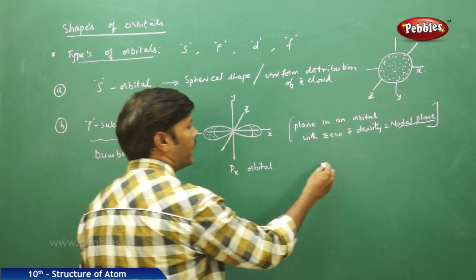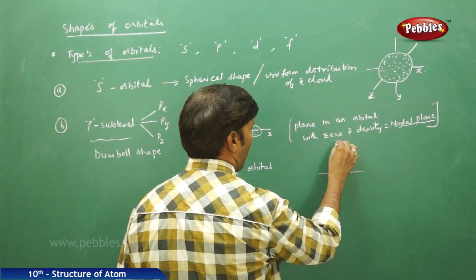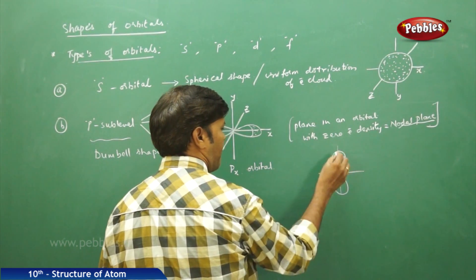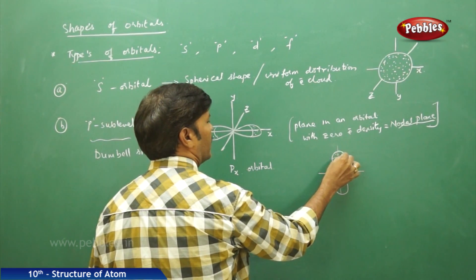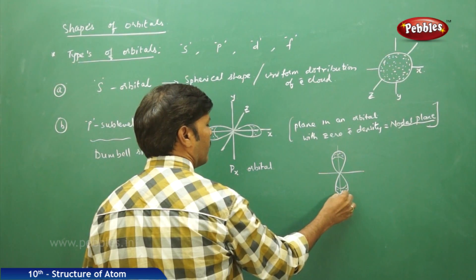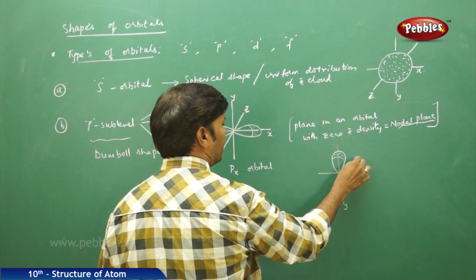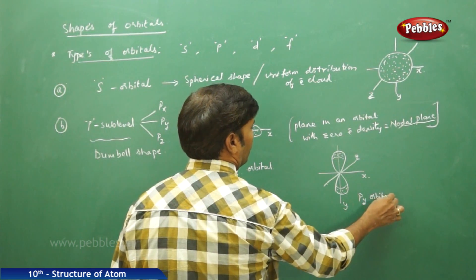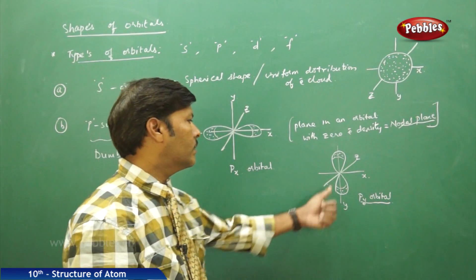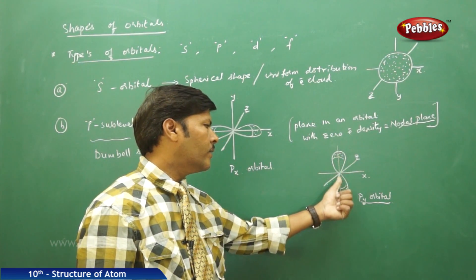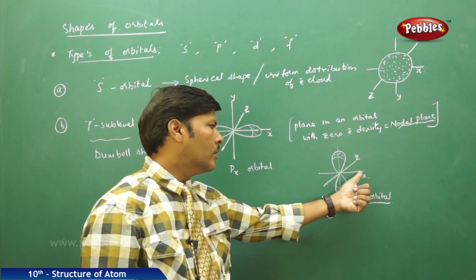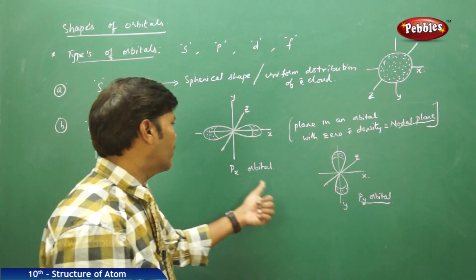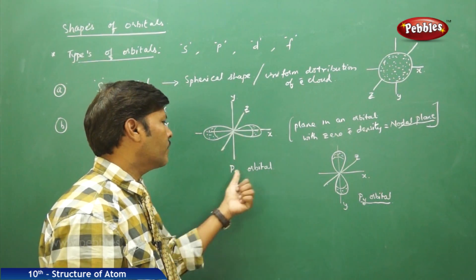For the py orbital, the electron density aligns along the y-axis — the two lobes are oriented in the y-axis. There is no electron density in the x-axis or z-axis, so the nodal planes in the py orbital are obtained in the x-axis and z-axis.